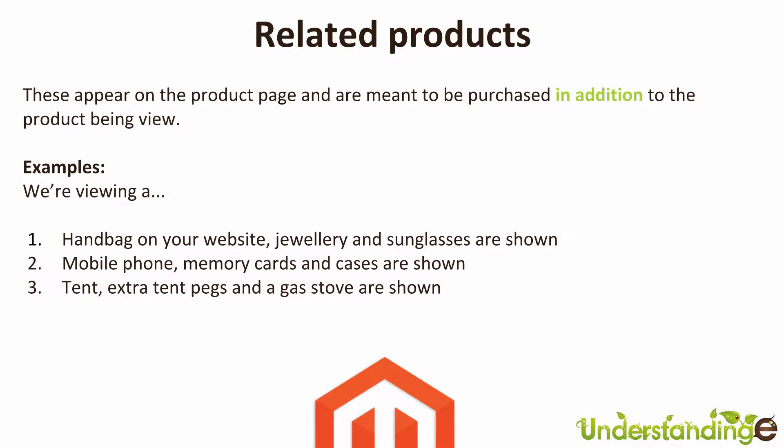The first of these are related products, and this is the obvious one — having some extra products shown underneath the rucksack for example. If your customer is viewing a handbag on your website, you show other related products like jewellery or sunglasses. They are related to the product being viewed and they help accessorize those items.